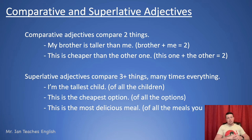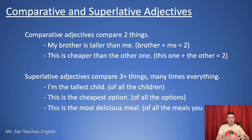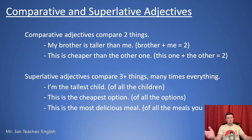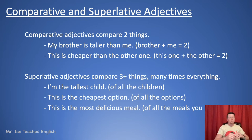Superlative adjectives — this is three or more, and many times everything. For example: I'm the tallest child of all the children — you have at least three kids and you are the tallest. This is the cheapest option of all the options. And this is the most delicious meal — meaning of all the meals that you have tasted. Many times we are comparing everything in the world, but we don't say that. The context is there because of this adjective.